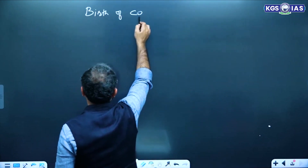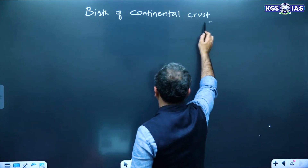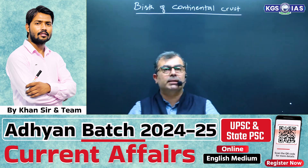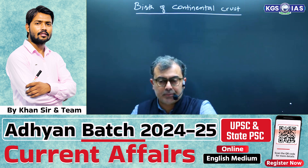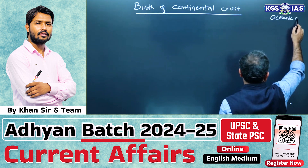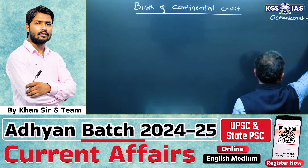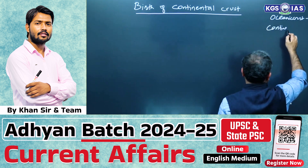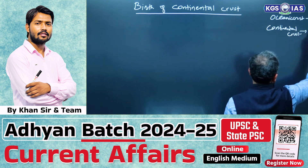What is the birth of oceans? Oceans are made up of a rock called basalt, while continents are made up of rocks called granite and andesite.